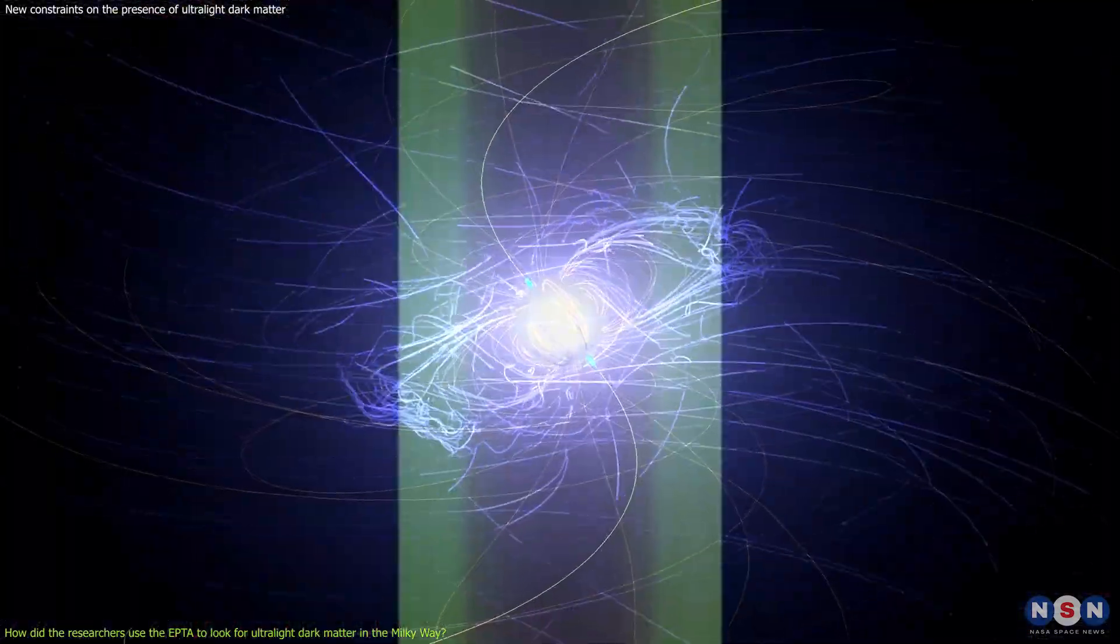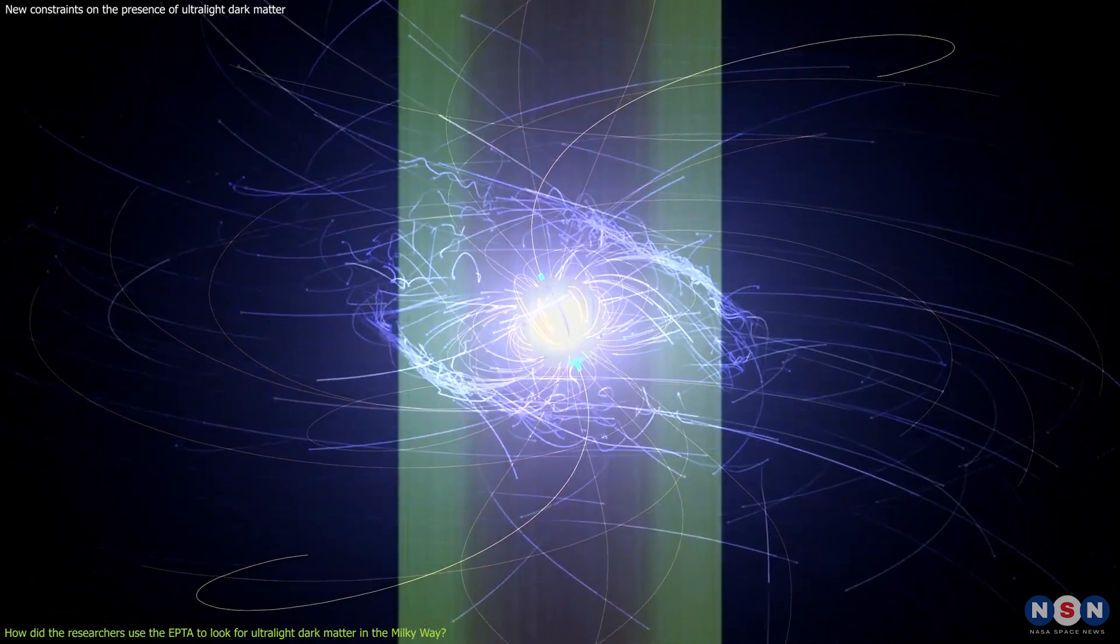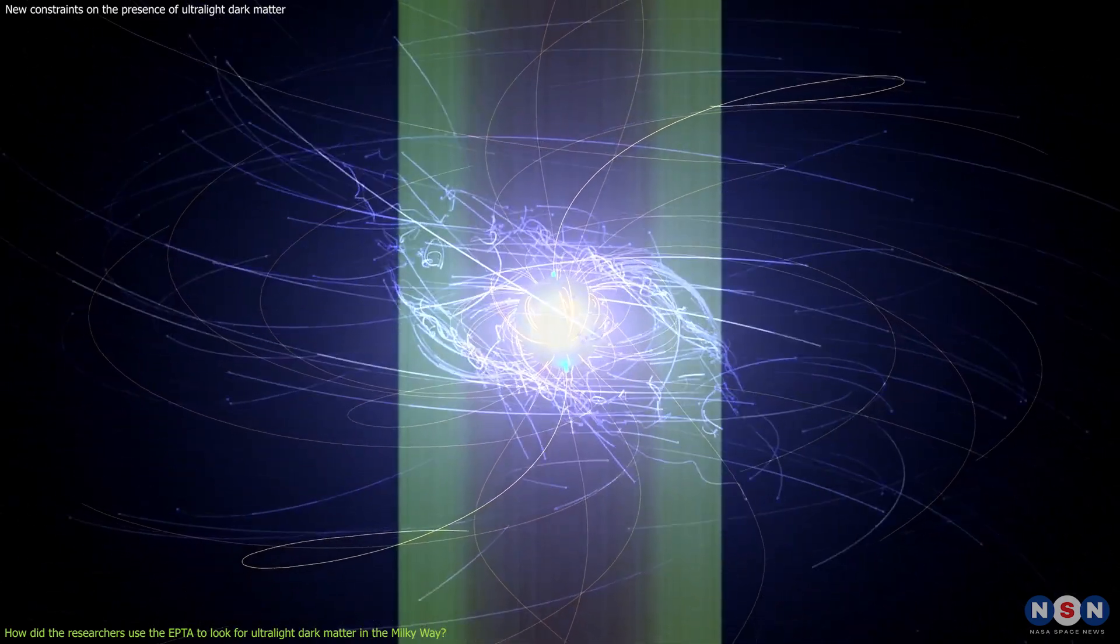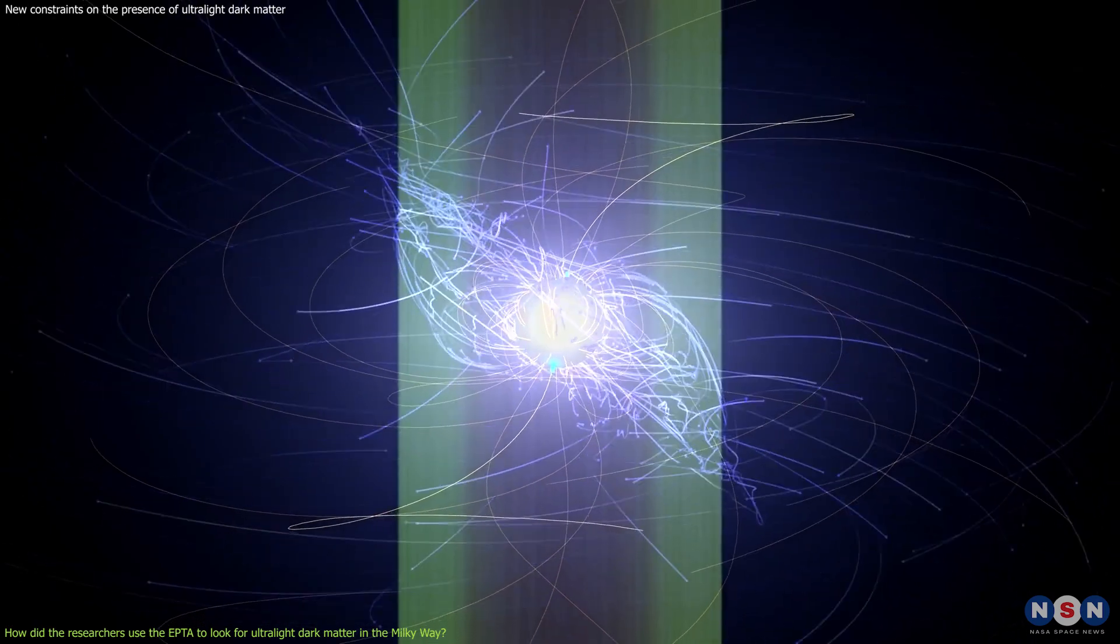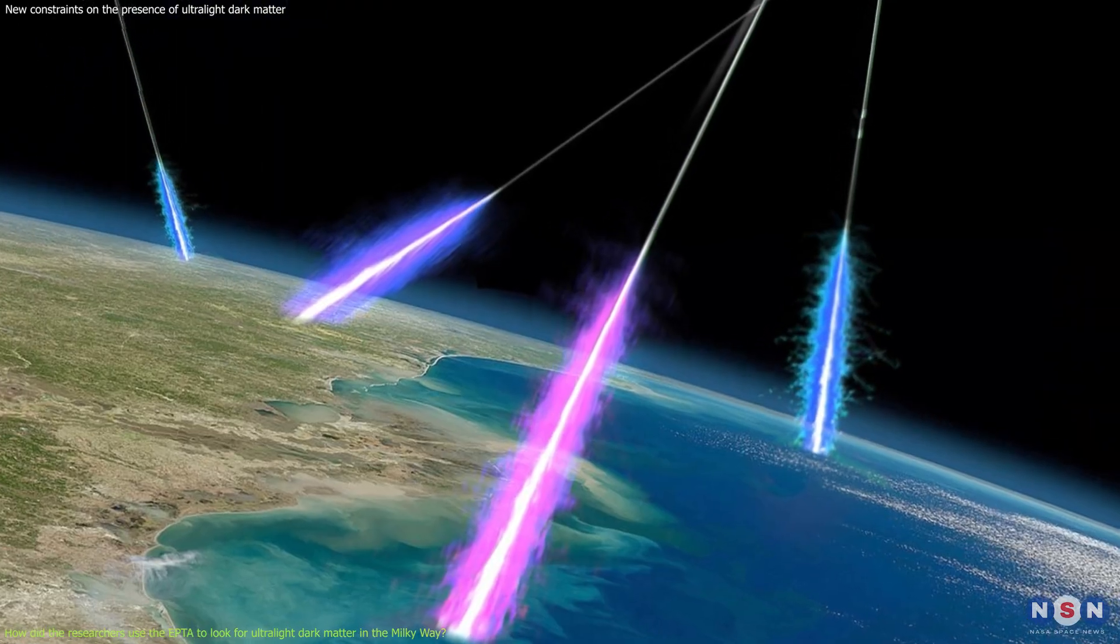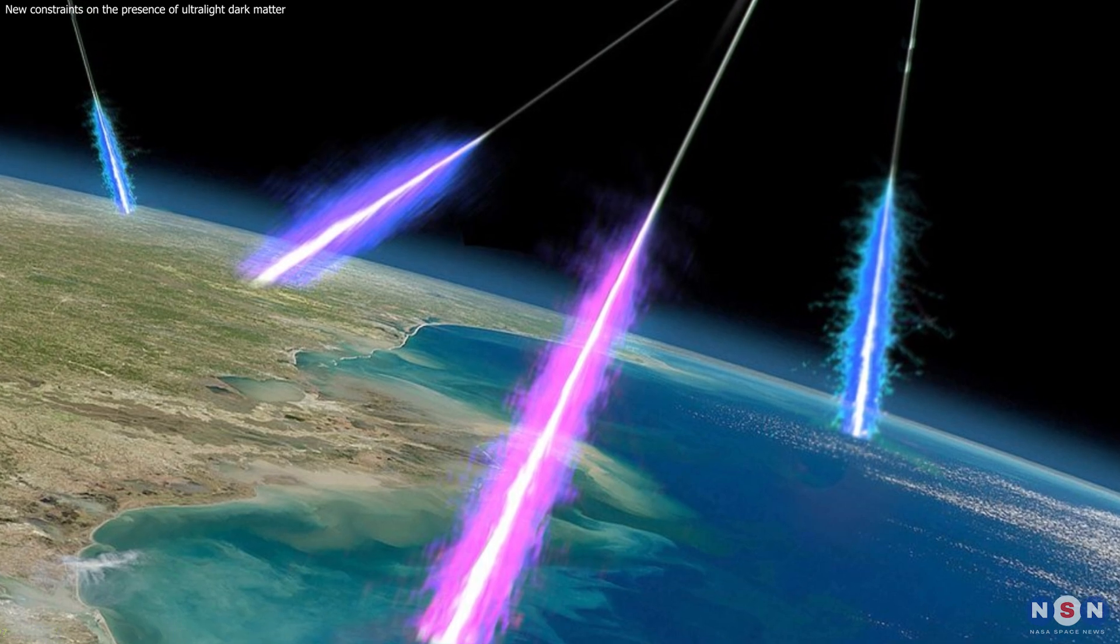They also set a new upper bound on the probability that axion-like particles are produced by the decay of a subatomic particle called eta-meson, which is created by the collisions of cosmic rays with the Earth's atmosphere.